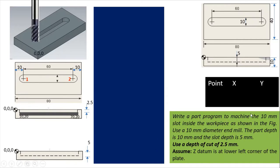Write a part program to machine the 10 mm slot inside the work piece as shown in the figure — meaning this diagram is given to you in the exam. Use a 10 mm diameter end mill cutter to make this slot, as I showed in this 3D sketch of the component. The part depth is 10 mm, meaning the total thickness of this plate is 10 mm, and the slot depth is 5 mm — meaning only a 5 mm deep slot is to be made in this plate.